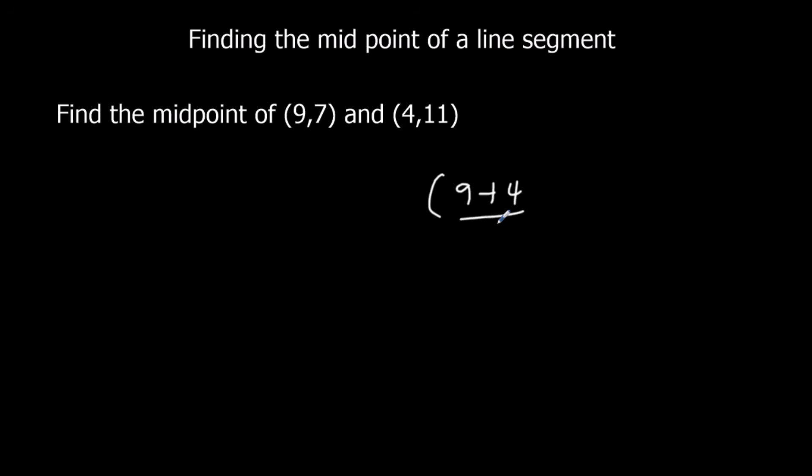So, 9 plus 4 over 2 and 7 plus 11 over 2. The middle of 9 and 4. So, 13 over 2 is 6.5, and 18 over 2 is 9. That's all we've got to do.